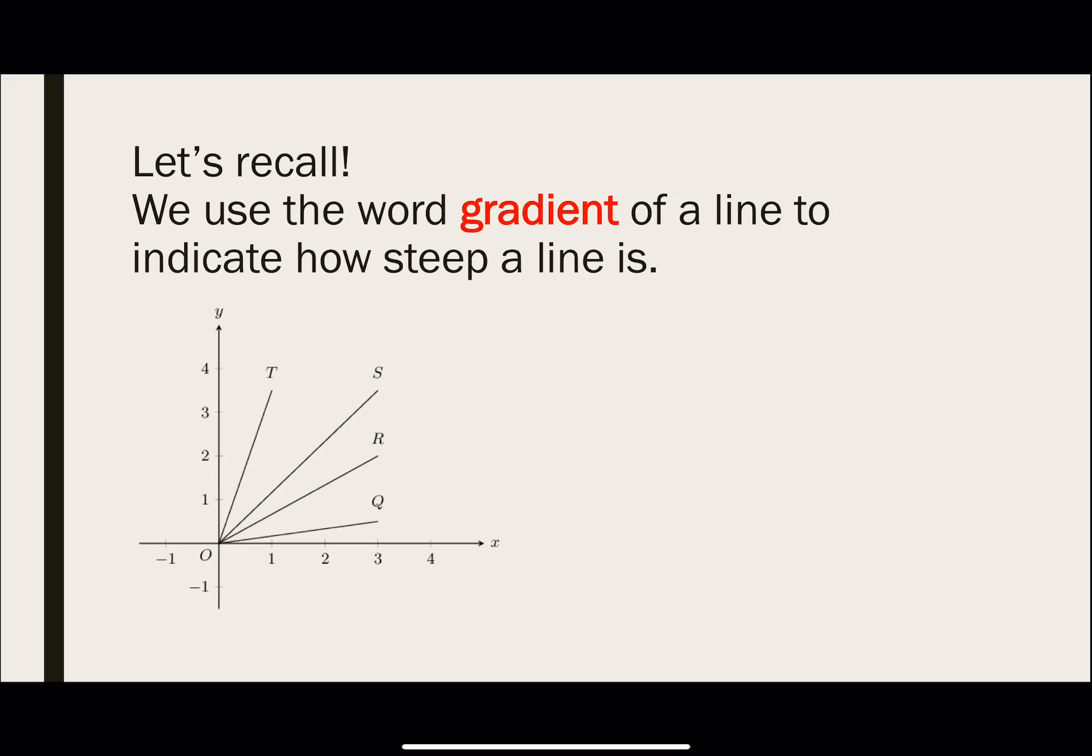we use the word gradient of a line to indicate how steep a line is. As you can see here, we have four lines T, S, R, and Q. We say that line T is steeper than all the other lines. This means that it has the largest gradient value. So the larger the gradient, the steeper it is.